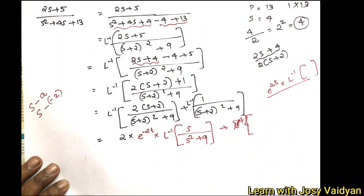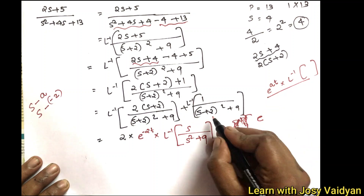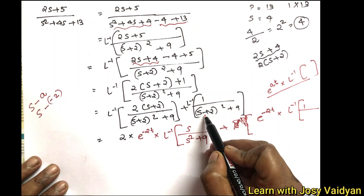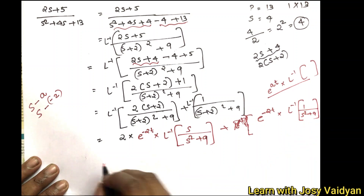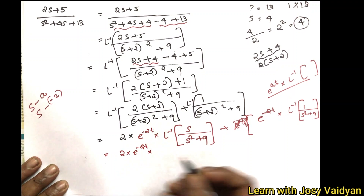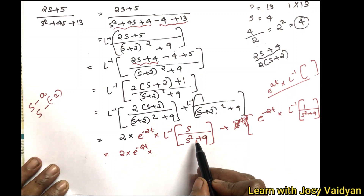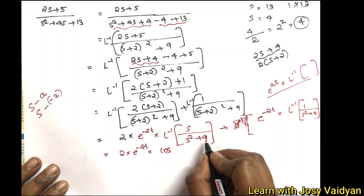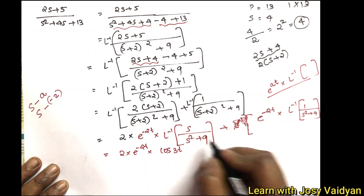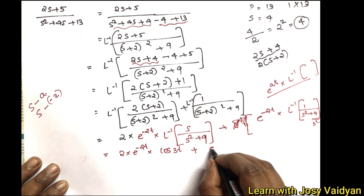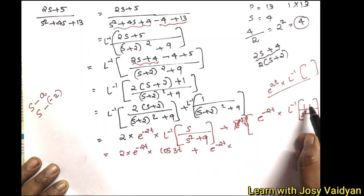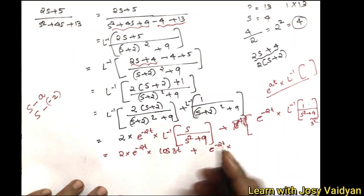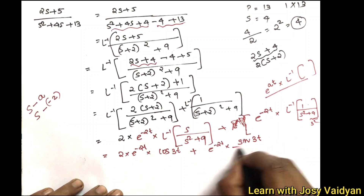We apply the shifting property. With s replaced by s plus 2, we get e raised to minus 2t into the L inverse. For s divided by s squared plus 9, the inverse is cos 3t, since a squared equals 9 so a equals 3. Plus e raised to minus 2t into 1 divided by s squared plus a squared, giving sin at divided by a, which is sin 3t divided by 3.